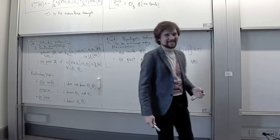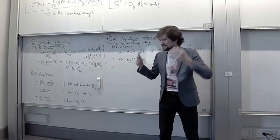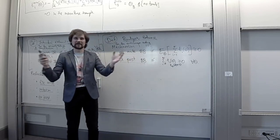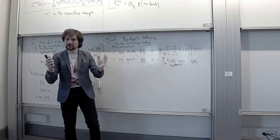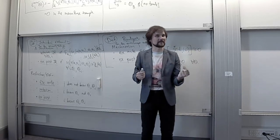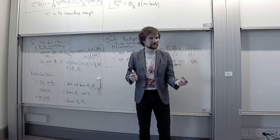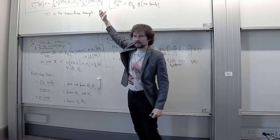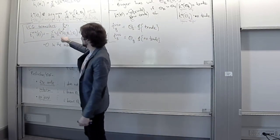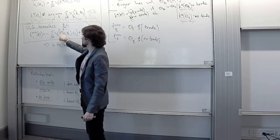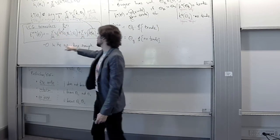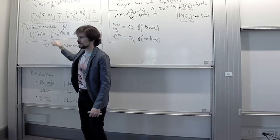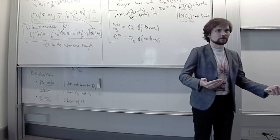Next week we'll discuss whether mechanisms that are individually rational and budget balanced can exist — using the bilateral trade example extensively. The VCG mechanism there was not IR, so can we make it IR while maintaining budget balance? Today's main result: even if a social choice function is not implementable on its own, if you have access to money, you can always find transfers that support it.